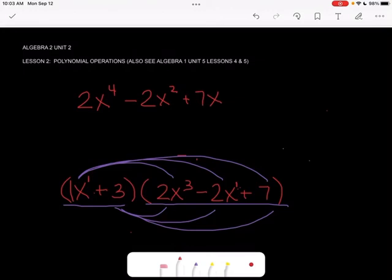Now I need to move to the 3. I've got 3 times 2x cubed, which would be 6x cubed. Then I've got 3 times negative 2x, which would be negative 6x. And 3 times 7, which is 21.